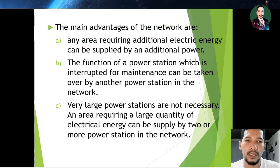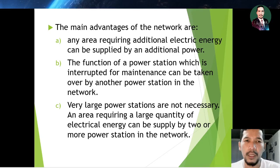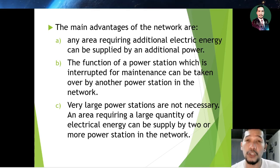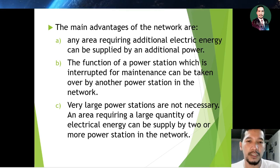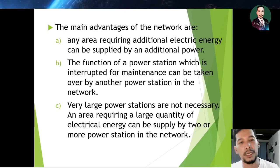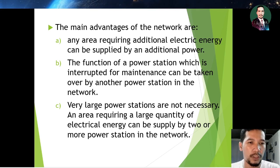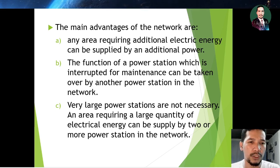The main advantages of the national grid network are: number one, any area requiring additional electrical energy can be supplied by an additional power station; number two, a power station interrupted for maintenance can be taken over by another power station in the network; number three, very large power stations are not necessary, as an area requiring a large quantity of electrical energy can be supplied by two or more power stations in the network.